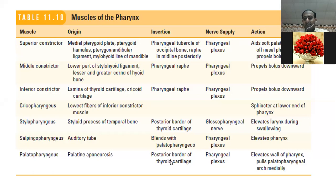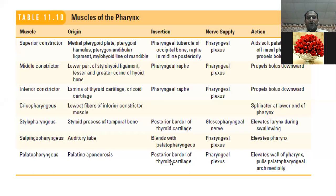The nerve supply is also the pharyngeal plexus for the cricopharyngeus, which acts as a sphincter at the lower end of the pharynx, closing it off.